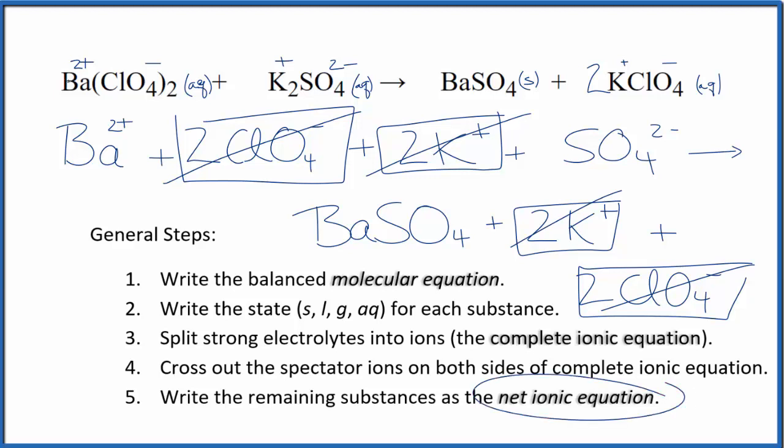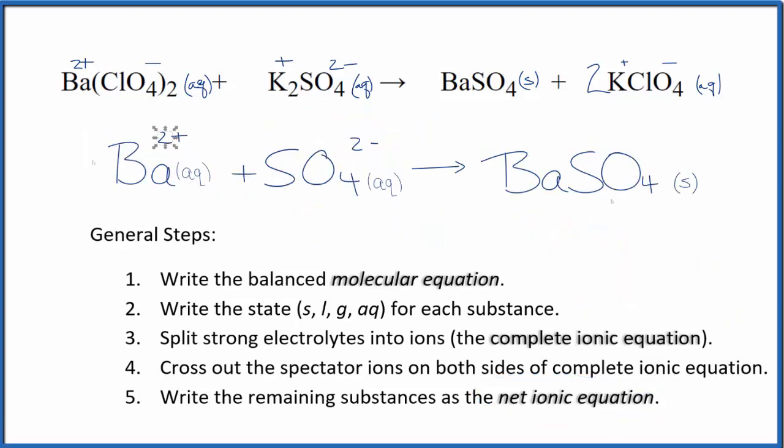What's left, that's the net ionic equation for BaClO4 2 plus K2SO4. I'll clean this up and write the states. We'll have our net ionic equation. So this is the balanced net ionic equation for barium perchlorate plus potassium sulfate. You can see the atoms, they're the same on both sides, and the charge balances as well. We have a 2 plus and a 2 minus, and that gives us a charge of 0, net charge of 0. This is neutral, net charge of 0. Charge balances.